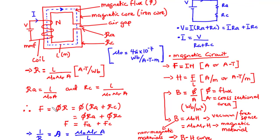From Ohm's law, the source voltage equals the current times the total resistance for an electrical circuit. In the case of a magnetic circuit, the magnetomotive force F equals the magnetic flux times the total reluctance. In this circuit, the total reluctance is composed of the reluctance of the air gap and the reluctance of the iron core. Multiplying the flux by R_A and R_C gives flux×R_A plus flux×R_C — that is, the magnetic potential drop across the air gap plus the magnetic potential drop across the iron core. Adding these two values gives the total magnetomotive force.